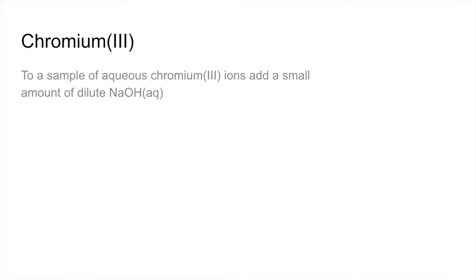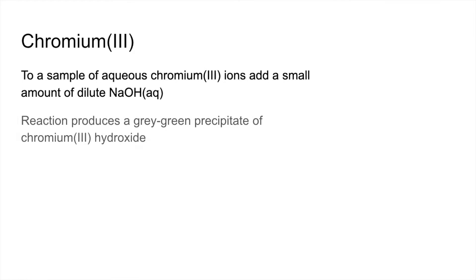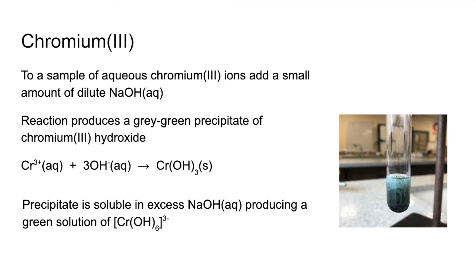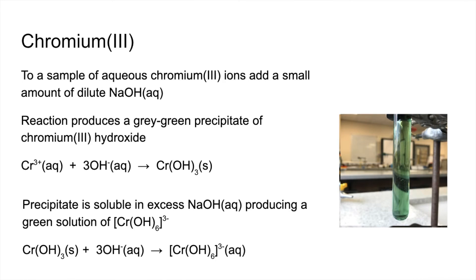Chromium-3 — same procedure. The reaction produces a grey-green precipitate of chromium-3 hydroxide. Unlike the others, this precipitate does dissolve in excess sodium hydroxide, giving a green solution of the complex ion [Cr(OH)6]³⁻. You can see the grey-green precipitate in the test tube, and in the photo with excess NaOH the precipitate has dissolved, leaving a green solution.